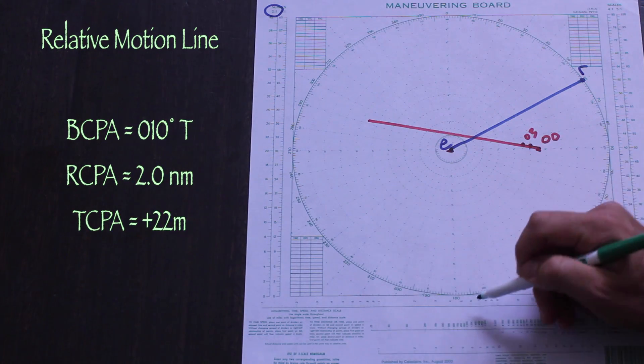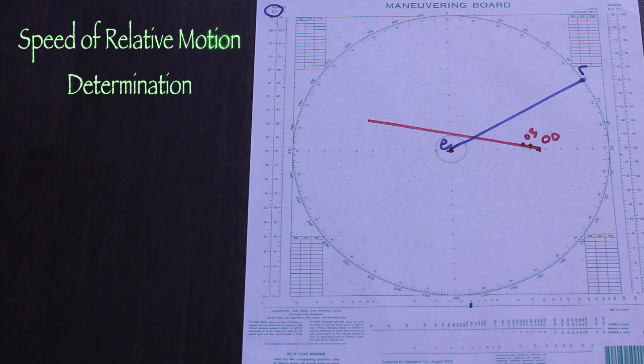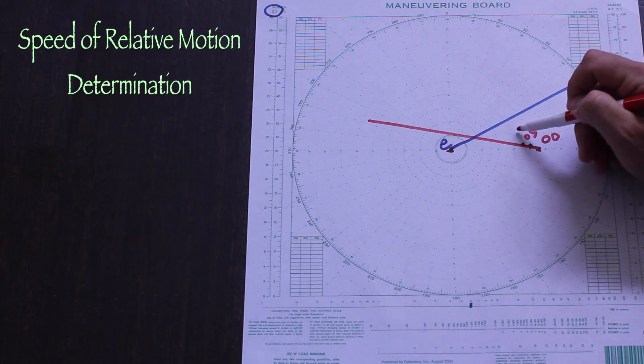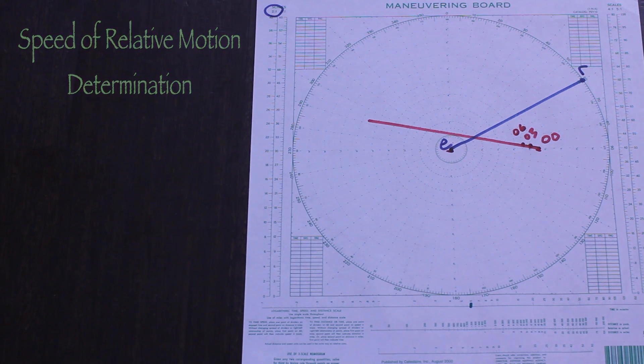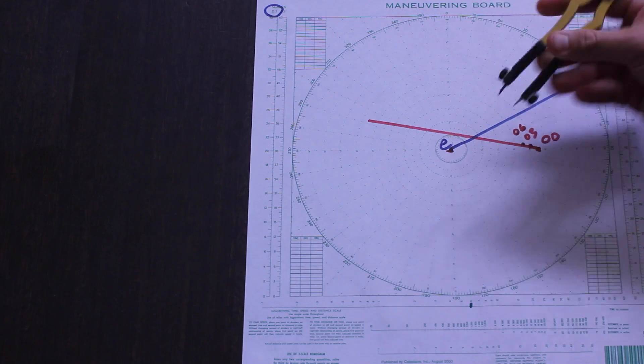Immediately apparent is that the contact will cross our bow and have a CPA of about 2 miles. We'll skip the time to CPA in this case so we can focus on getting the true course and speed. That will tell us what type of maneuvering situation we're in.